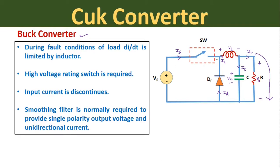Second point: a high voltage rating switch is required. The switch SW is connected in series with the source. In the buck converter, the input voltage Vs will always be greater than the output voltage V0, so this high input voltage should be handled by switch SW which is present in series with the source voltage. Therefore a high voltage rating switch is required in the buck converter.